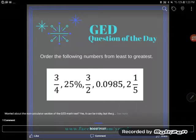It's GED question of the day and this time we've got an ordering problem. Let's take a look. It says order the following numbers from least to greatest.